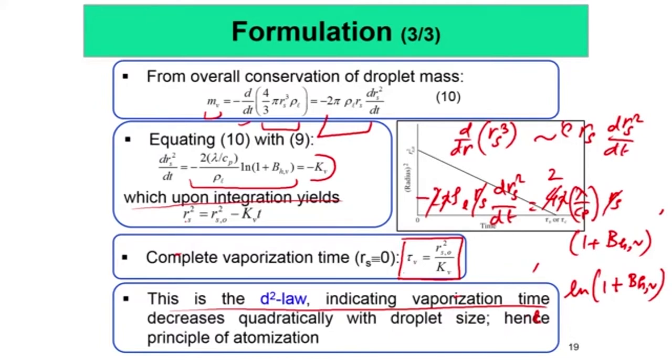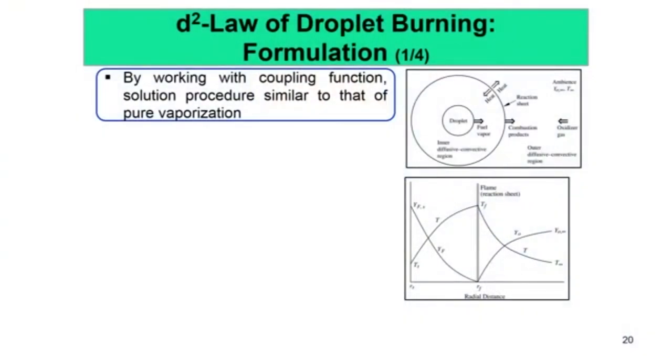The larger the droplet, the more time needed; the smaller the droplet, the less time. If you can create a spray that atomizes into very small droplets, the spray will become a fuel vapor cloud in a very short amount of time, which is what is required for proper mixing and combustion with less soot. Now we move to the topic of droplet burning. So far we have discussed droplet vaporization; now we will apply the principles of the non-premixed flame from the previous class to understand droplet combustion.